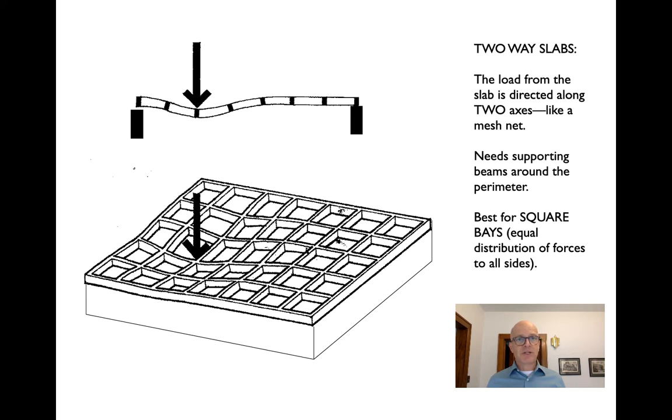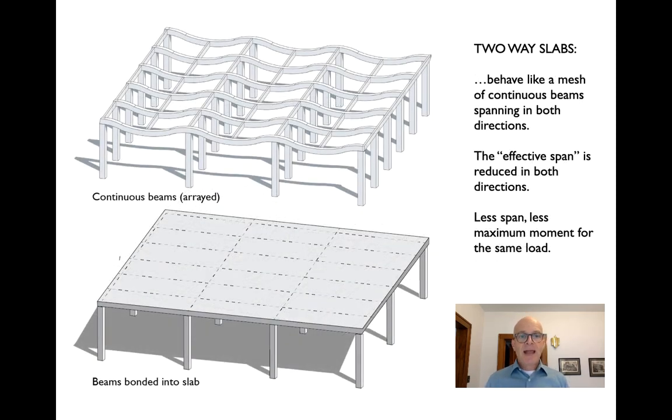If we're designing something that is more of a square bay, less than one to 1.5, we find that this two-way action is much, much more efficient because it distributes the loads and the internal stresses to all four sides, right? Not just the two supports that we're used to when we're talking about beams. And we can also take advantage of the fact that if we do have a beam and slab system, if we connect them together, bonding the beams to the slab, then we're basically making a mesh, a grid, a network of beams below. And once we load one corner of the slab, all of those beams are going to have to deflect to carry the load, to distribute it to the supports.